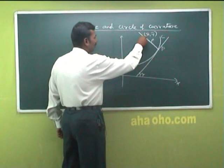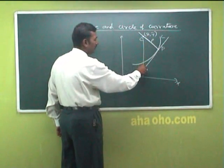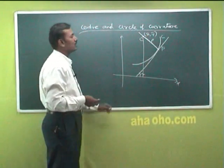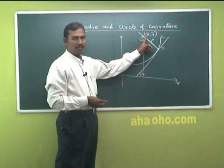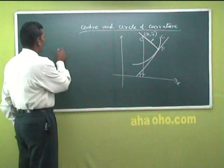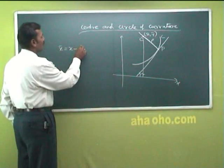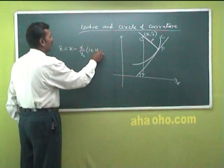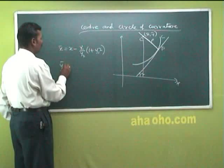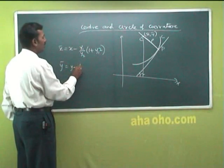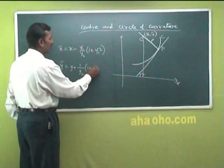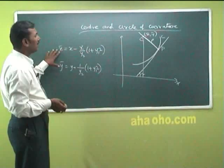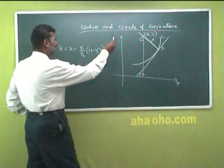After drawing a perpendicular to the x-axis and simplifying, we get: x̄ = x − (y₁/y₂)(1 + y₁²), and ȳ = y + (1/y₂)(1 + y₁²). This is the formula for finding the center of curvature. Next, the circle of curvature.